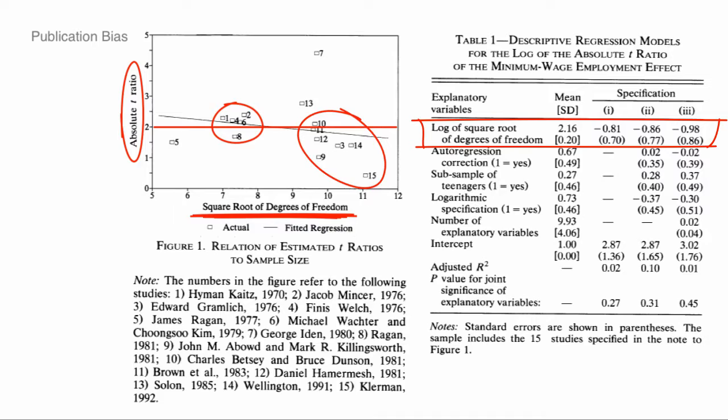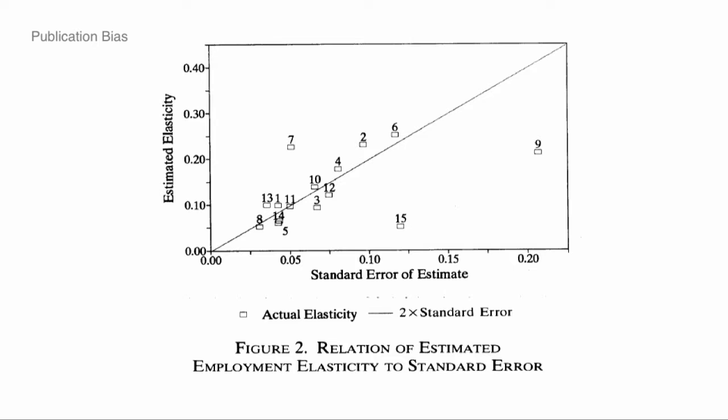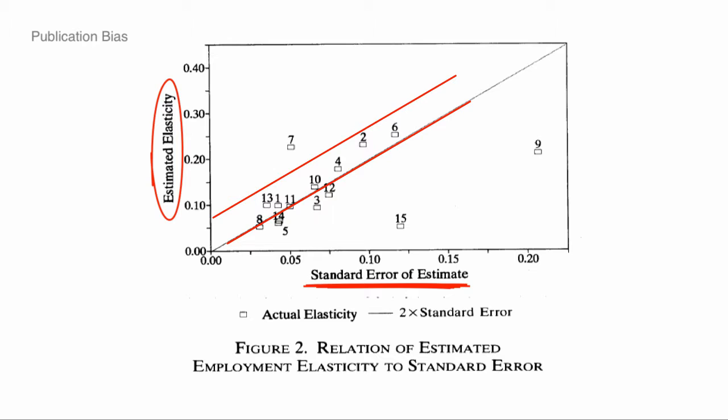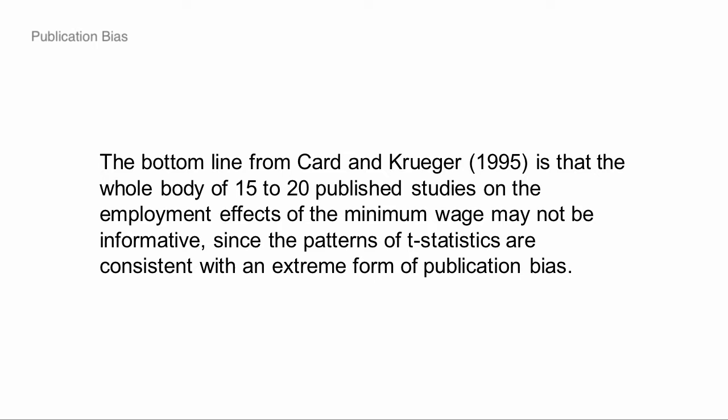Here's another way of looking at the data. On one axis we've got the standard error, and on the other this is the estimated effect. What they plot out is two times the standard error, and you just get this incredible clustering of studies right above two times the standard error — totally unnatural. And what's really concerning is these studies with really small standard errors down here. These are the well-powered studies with the big degrees of freedom, and they show kind of small, near-zero effects. Those are probably the most reliable studies.